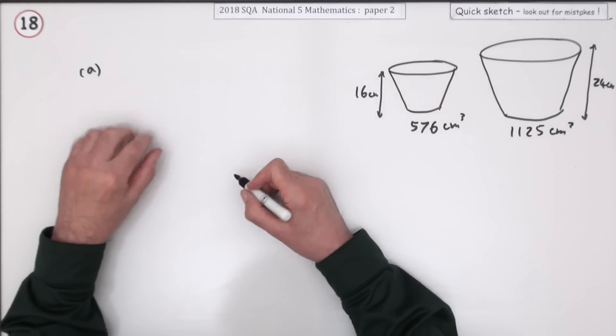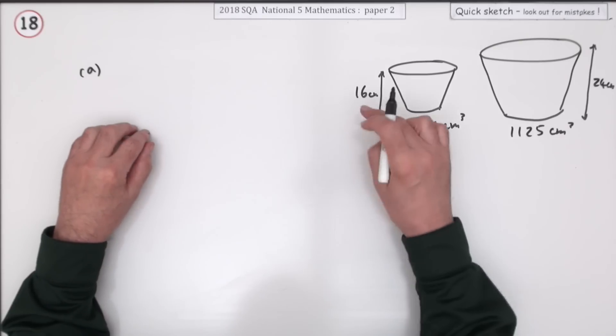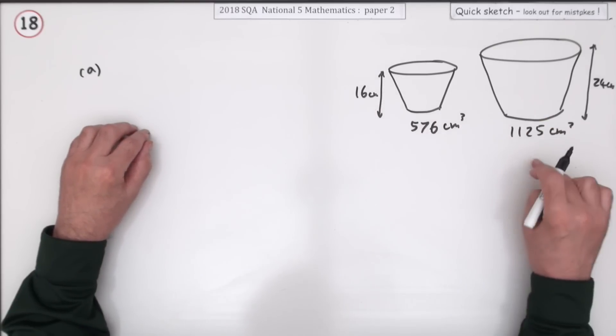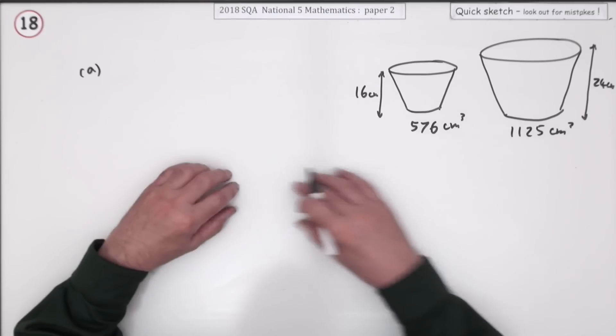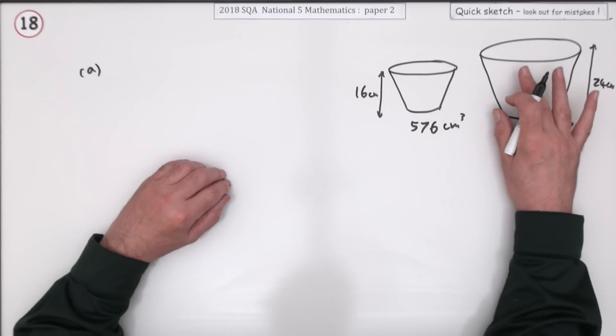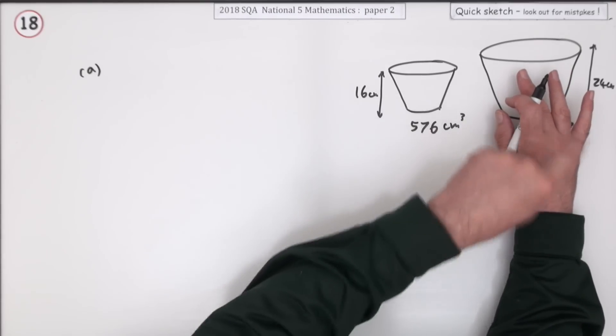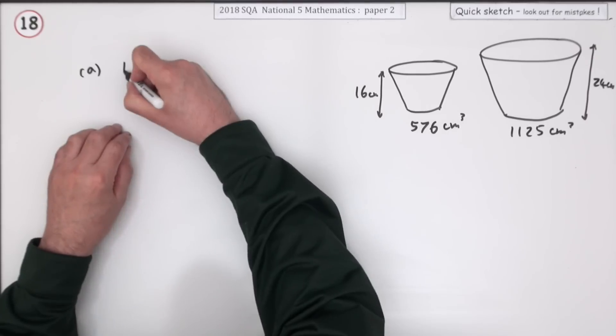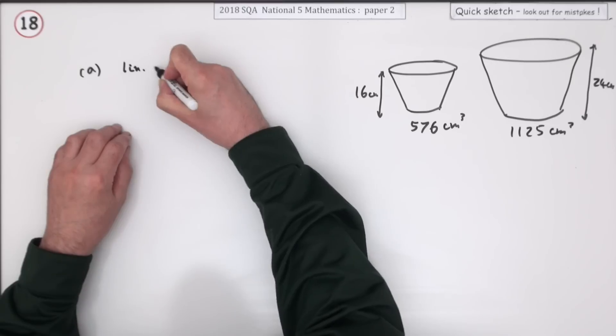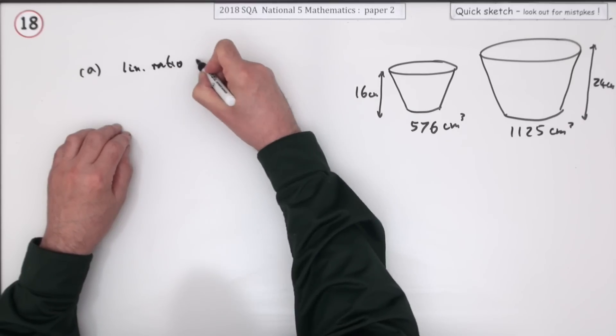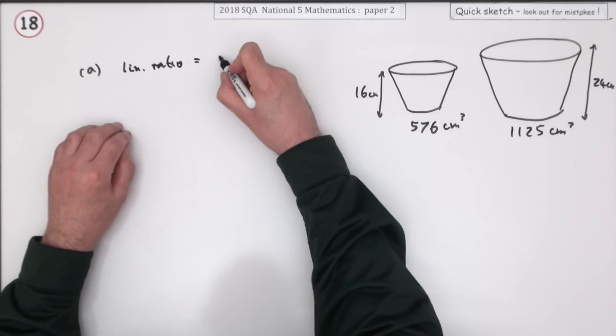There are several ways of doing that. You could work out what the ratio should have been and compare it to the actual ratio, or work out what the volume should be. Either way, I need the linear ratio. The linear ratio is 16 to 24, which divides by 8 to give 2 to 3.